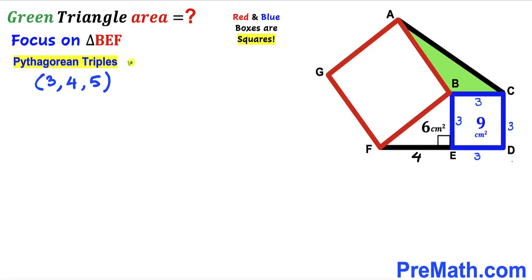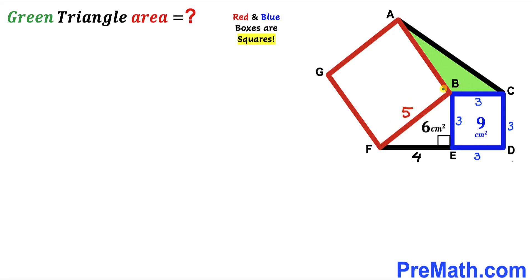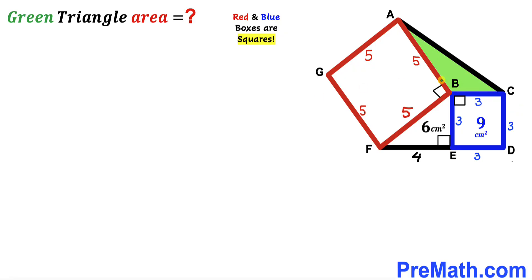Recalling the Pythagorean triplet 3, 4, 5: since the sides of right triangle BEF are 3 and 4, the hypotenuse BF must be 5 cm. Therefore BF is 5 cm, which is the side length of the red square, so all sides of the red square are 5 cm.